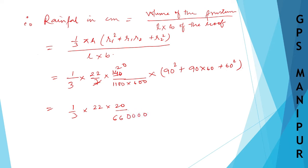If I multiply this down, 90² is 81, 9 × 9 is 81, plus 90 × 60 is 54, plus 60² is 36, double zero. Now 1/3, 22 × 20 will be 440 divided by 3 × 66,000.